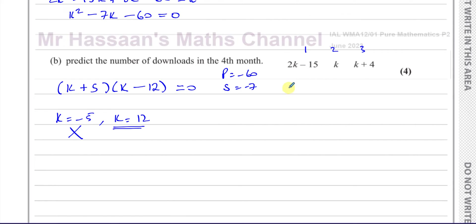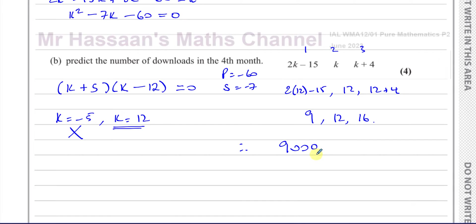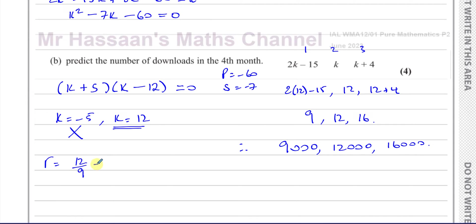Substituting k equals 12: 2k minus 15 gives 24 minus 15 which is 9, k gives 12, and k plus 4 gives 16. So there are 9,000 downloads, 12,000 downloads, and 16,000 downloads in the first three months, because the values are in thousands. From this we can find the common ratio: 12 over 9 simplifies to 4 over 3. So the common ratio is 4 over 3.